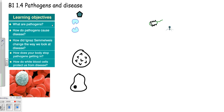Let's take a quick recap of our learning objectives. In the first video, we learnt what are pathogens, and these are bacteria, fungi and viruses. We then took a look at how the different types of pathogens cause disease. In our last video, we looked at how our body stops pathogens getting in, and also the three types of transmission where pathogens will try and get into your body. This video is going to focus on how do white blood cells protect us from disease.